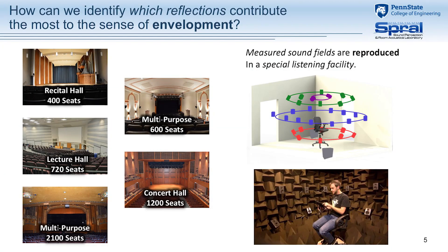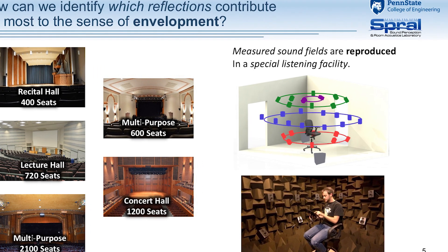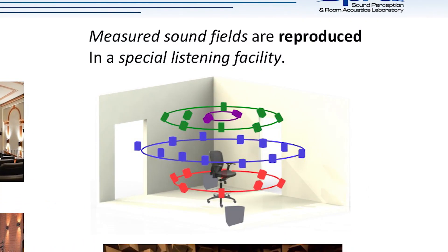The halls represent different uses — recital hall, concert hall, lecture hall. Two of these are on campus: the Ezber recital hall and the large Thomas lecture hall. We take these measurements and then reproduce them in a special facility we have here on campus that has 30 loudspeakers. A person can then go into the facility, hear any number of these halls with classical music, and rate them.